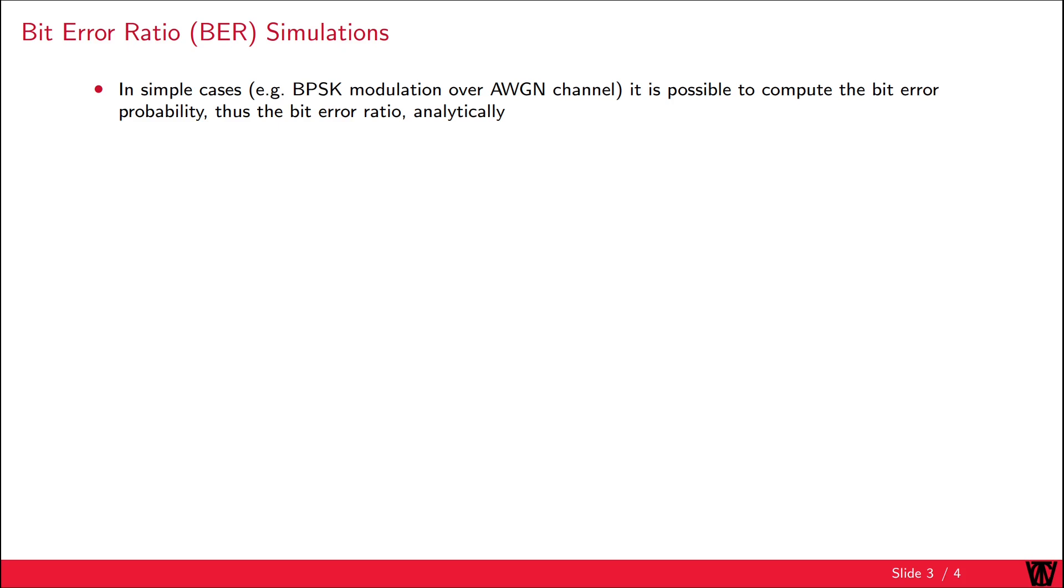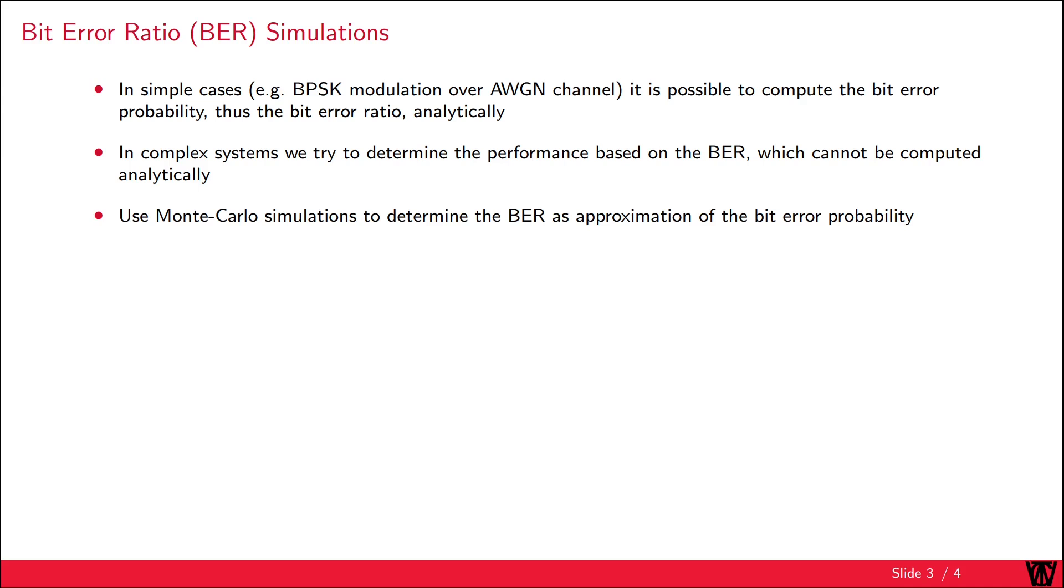One example is the transmission of a BPSK modulated signal over an additive white Gaussian noise channel. This topic is discussed in another video linked in the description. For complex systems, it might be impossible to calculate the BER analytically. Consequently, we use Monte Carlo simulations to determine the BER and approximate the bit error probability.